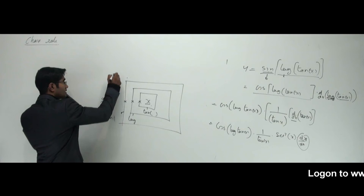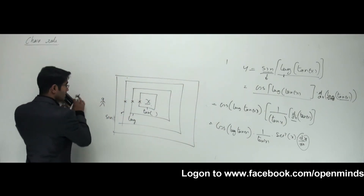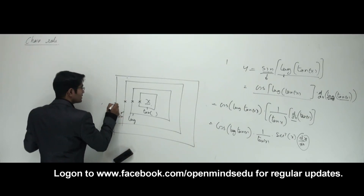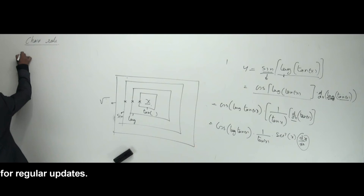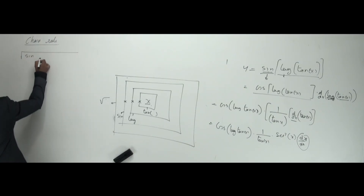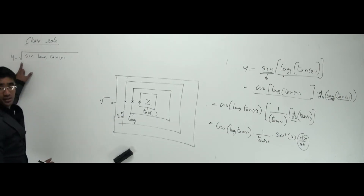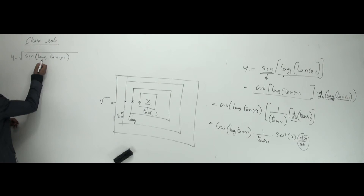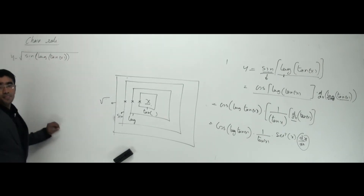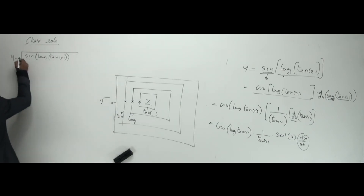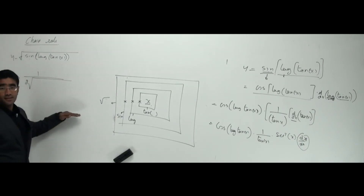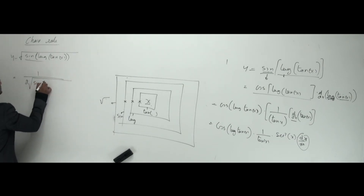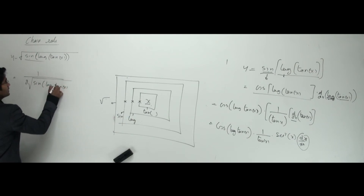We can extend this to more than three chains. For example, y = √(sin(log(tan x))) has four walls: root, sine, log, and tan. To start, we break the outermost function — the square root. The differentiation of √x is 1/(2√x), so we get 1/(2√(sin(log(tan x)))), and the inside expression remains to be differentiated.